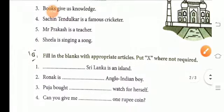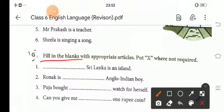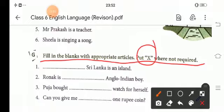Now, this is the article. We have to fill a proper article. And, where it is necessary, we will cross, where it is not required. First one, Sri Lanka is an island. There is no article required. In the second one, Ronak is an.